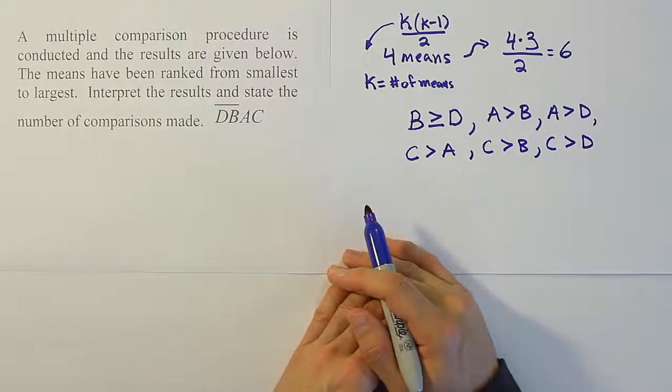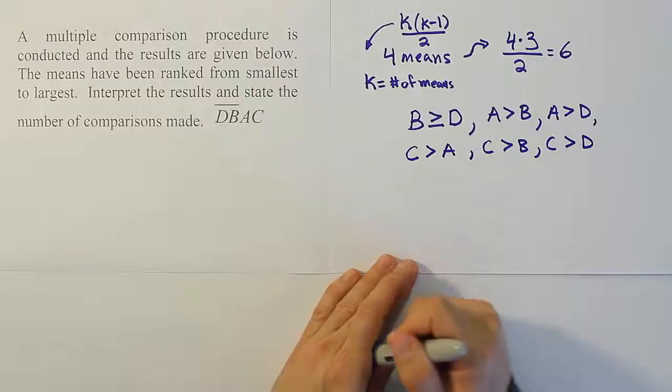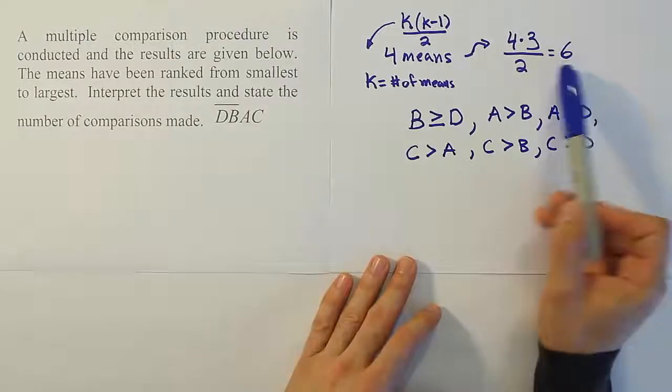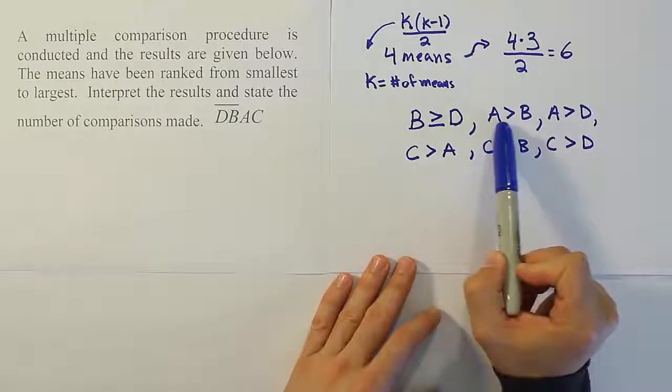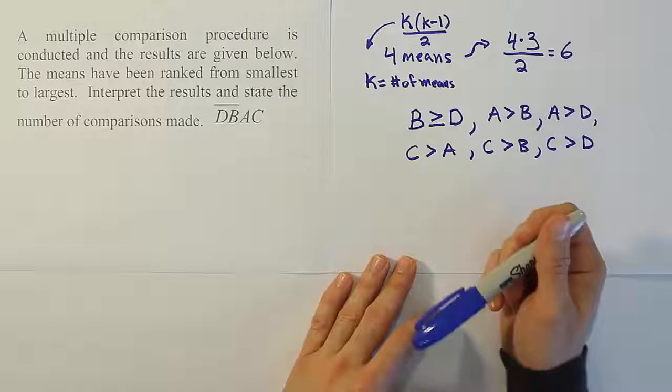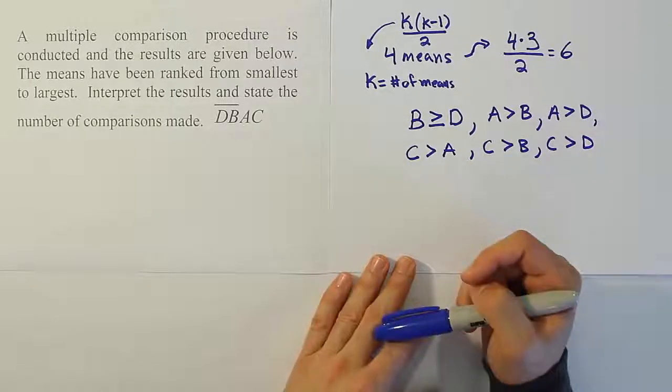All right, so from there we have pretty much everything we can possibly derive from this drawing. Remember we made 6 comparisons. There would have been 6 little confidence intervals, and we have 6 conclusions here from that statement. So we have as many conclusions as comparisons, and that's all we can ever get from the diagram.